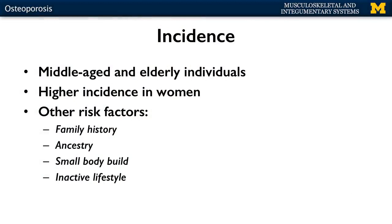Other risk factors include family history — like many other disorders, if your mother or grandmother had osteoporosis, you're typically more likely to have it. Ancestry can also play a role: individuals of European or Asian ancestry typically have a higher incidence of osteoporosis. Small body build is a risk factor, as previously discussed. Finally, an inactive lifestyle — if you're not doing weight-bearing exercises that contract muscles and stress the attached bone — can really play a role by not stimulating osteoblasts to secrete at a normal level.